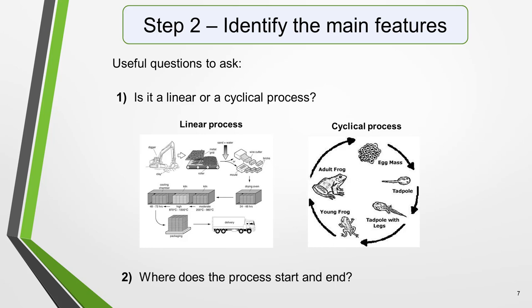Here are some useful questions to ask. 1. Is it a linear or a cyclical process? A linear process starts and finishes at different places. It will often involve the manufacture or creation of something, starting with the raw materials going in at one end and the finished product coming out at the other end.